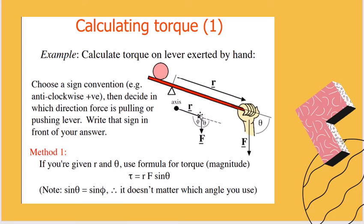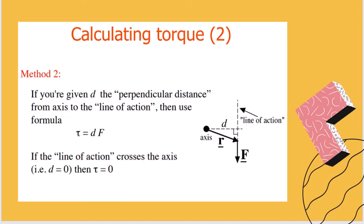So given the data and the given force — the exerted force is downward. You're going to extend the line of action to find the angle. Note: it doesn't matter which angle you use — use whichever angle you are more comfortable with. For calculating the torque — method two: if you're given D, the perpendicular distance from the axis to the line of action, then use the formula torque equals D multiplied by the given force. So based on the diagram, draw a perpendicular from the cross marking the axis to the line of action, measure that distance, then multiply by the given force.